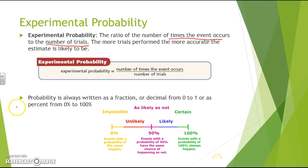When working with probability, you'll see it written as a fraction or decimal — ranging from 0 to 1 — or as a percent, ranging from 0% to 100%.